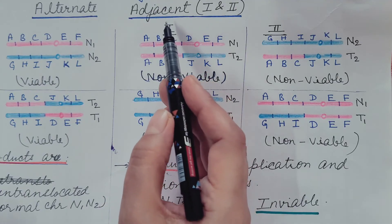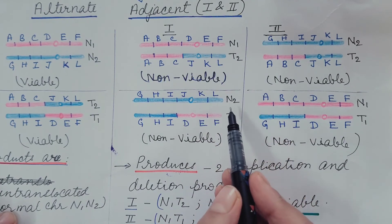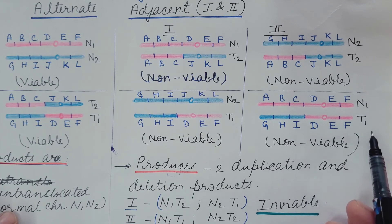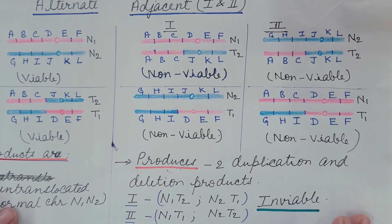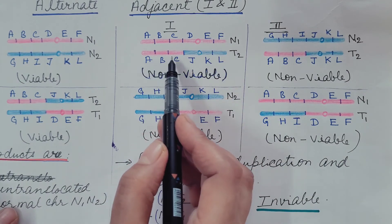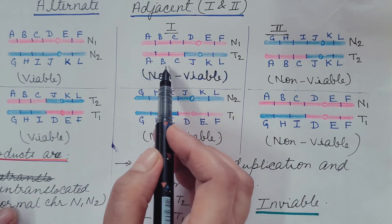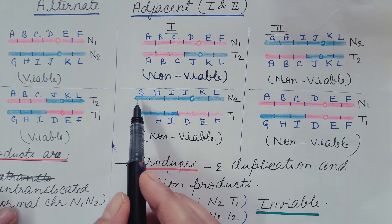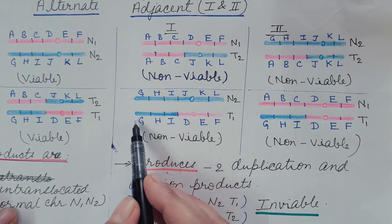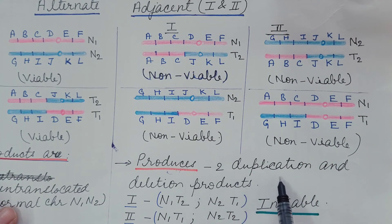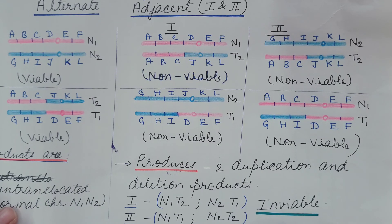In adjacent segregation, adjacent one produces one gamete with N1 and T2, and another with N2 and T1. Adjacent two produces one gamete with N2 and T2, and another with N1 and T1. All gametes from adjacent segregation have duplication and deletion products — for example, ABC is duplicated while GHI is absent, or GHI is duplicated while ABC is absent. These unbalanced products are inviable or less viable, and the resulting offspring are less fertile or non-functional.